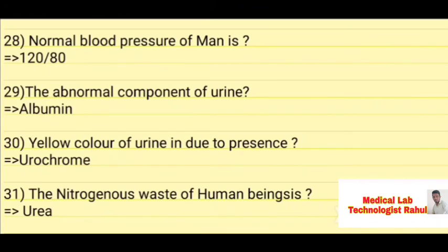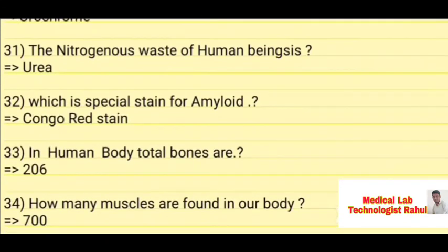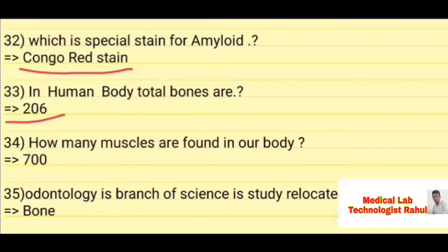The normal blood pressure in a man is 120/80 mmHg. The normal component of urine: yellow color of urine is due to presence of urochrome. The nitrogenous waste product in humans is urea. In the human body, total bones in adults are 206. There are 700 muscles found in the human body.